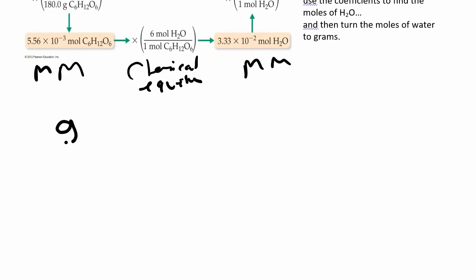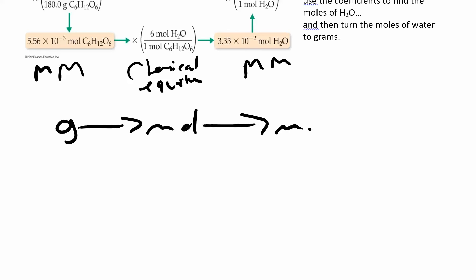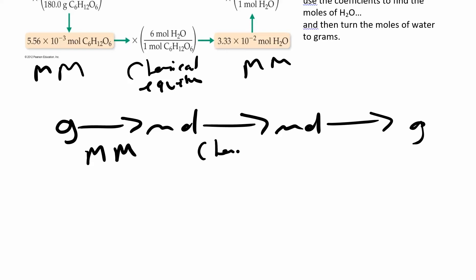With units laid out: you go from grams of A to moles of A, then moles of A to moles of B, then moles of B to grams of B. How do you go from grams to moles? That's a molar mass. How do you go from moles to moles? You use the chemical equation.